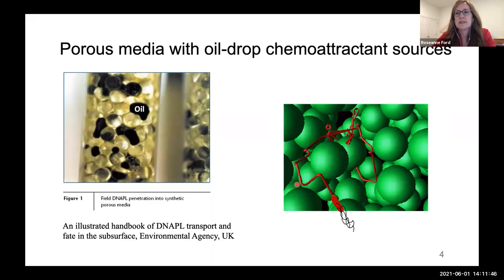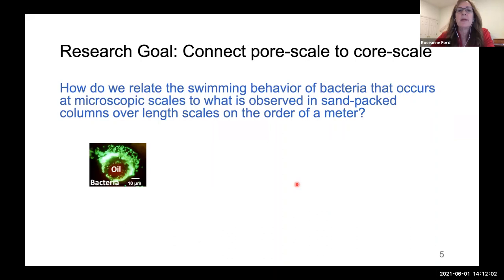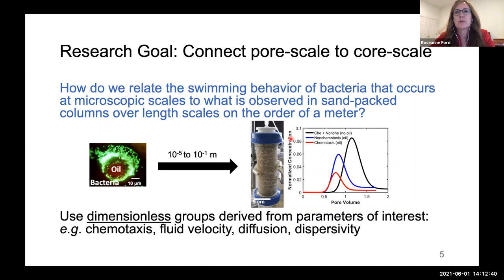The second complexity is the structure of the porous matrix. Bacteria may have to alter their swimming trajectories as they navigate around the obstacles represented by grains to reach the contaminant source. Our overarching research goal in this project is to connect the pore-scale phenomena to core-scale observations across multiple length scales that can span microns to meters. We observe that micron-sized bacteria are able to accumulate around an oil droplet containing a pollutant.